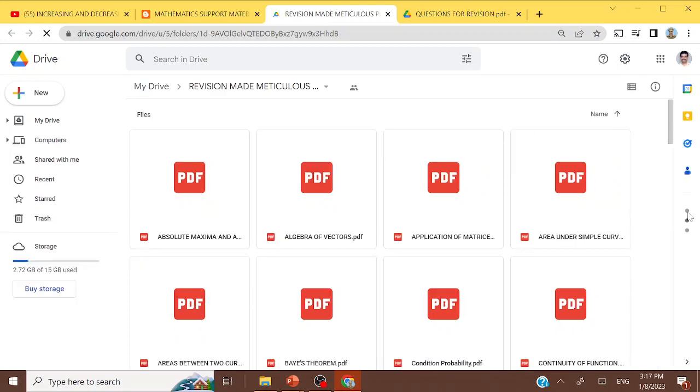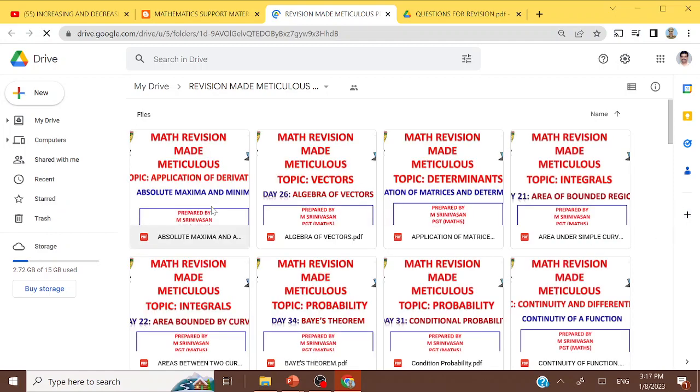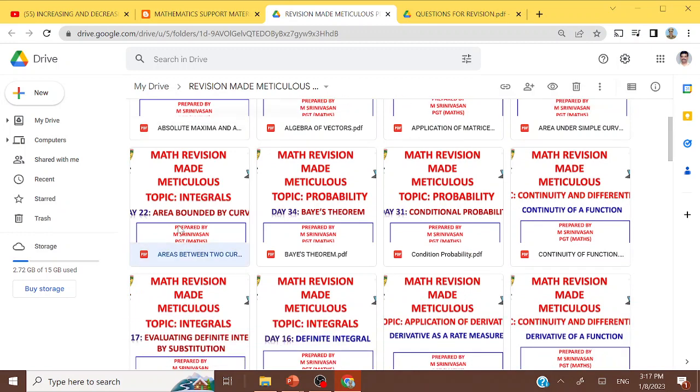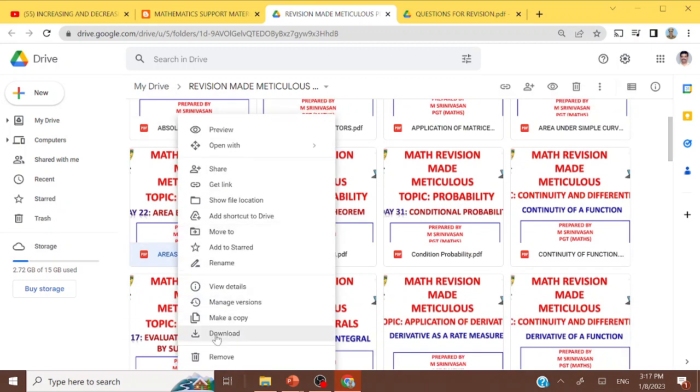It will open in your account or simply you can right-click it and then you can open it. And based on the name, for example, absolute maximum minimum, algebra of vectors, based on the name you simply right-click it and then you can download it and you can see the answers in PDF form.